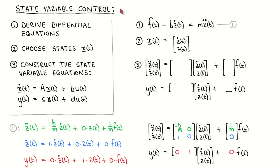In contrast to classical control, in the state variable control approach we stay in the time domain and describe the dynamics of the system as state variable equations. The modeling process consists of the following steps: we start at the same place by deriving the differential equations for the system, then choose a set of states and define the state vector x, and lastly manipulate the differential equations to write them as two matrix equations — the state equation and the output equation.